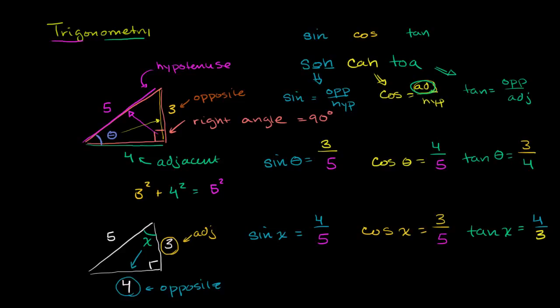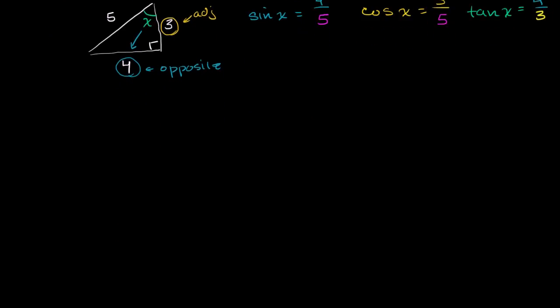Let's do a ton more examples, just so that we make sure we're getting this trig function thing down well. So let's construct ourselves some right triangles. I want to be very clear — the way I've defined it so far, this will only work in right triangles. So if you're trying to find the trig functions of angles that aren't part of right triangles, we're going to have to construct right triangles.